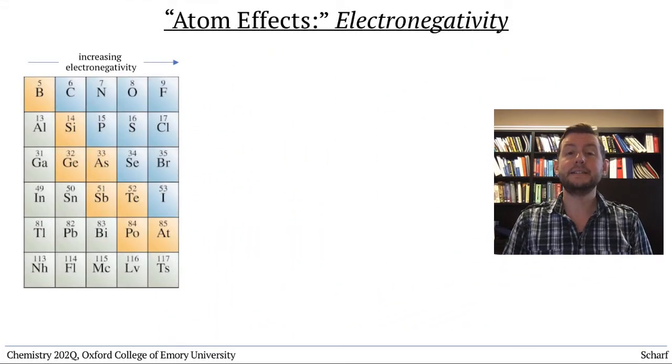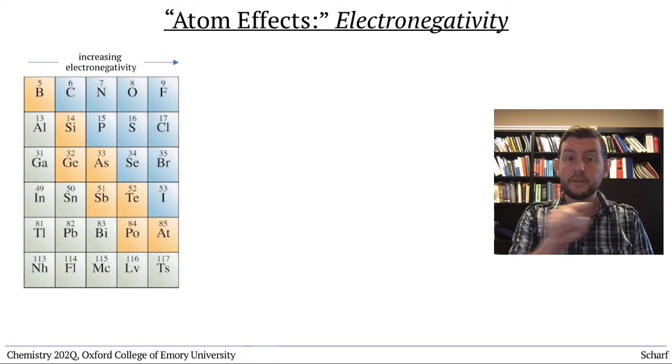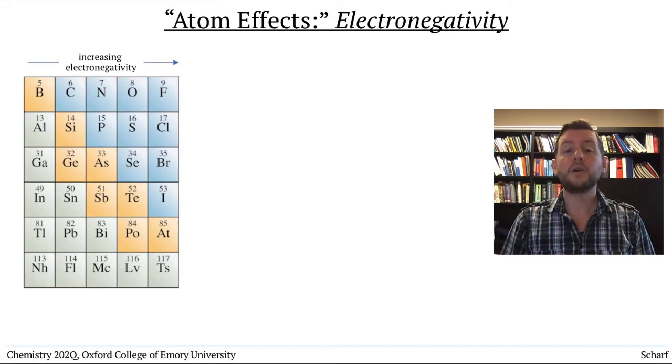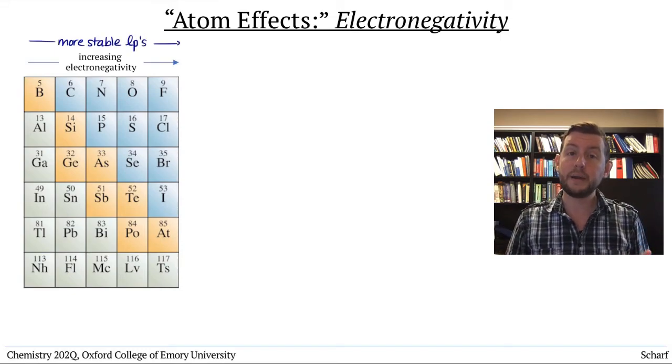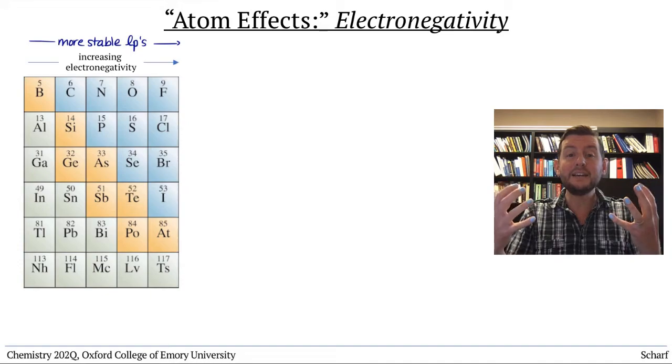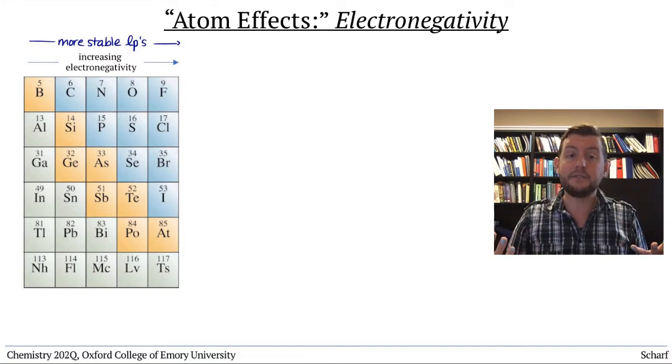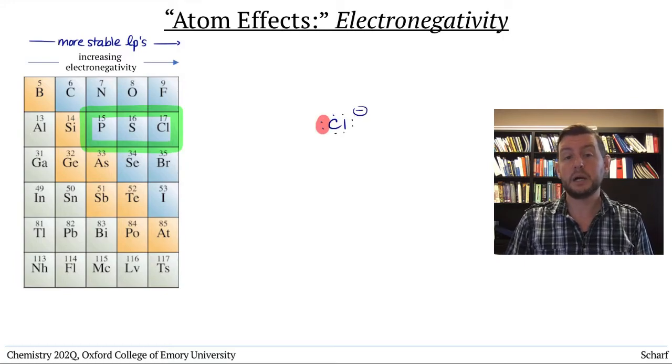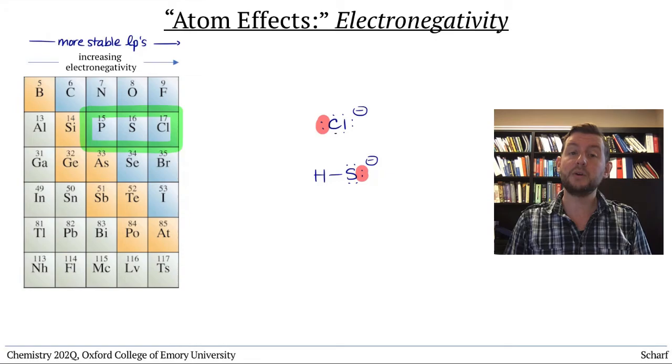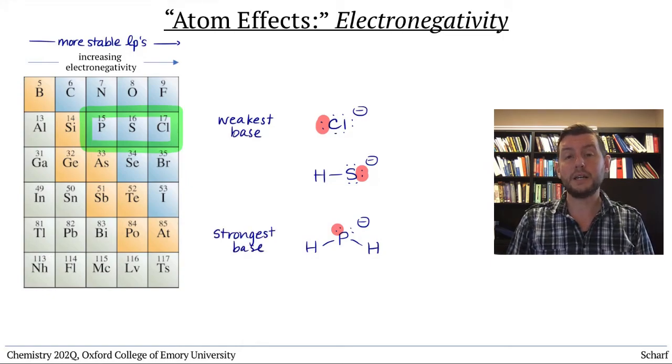The first atom effect is electronegativity. When we're comparing atoms within the same row of the periodic table, the more electronegative an atom is, the lower in energy or more stable its lone pairs are. Because the more electronegative an atom is, the more tightly it hangs on to its electrons, and the less reactive they are. This means that chloride has more stable lone pairs than hydrogen sulfide, which has more stable lone pairs than dihydrogen phosphide. So Cl- is less basic than HS-, which is less basic than H2P-.